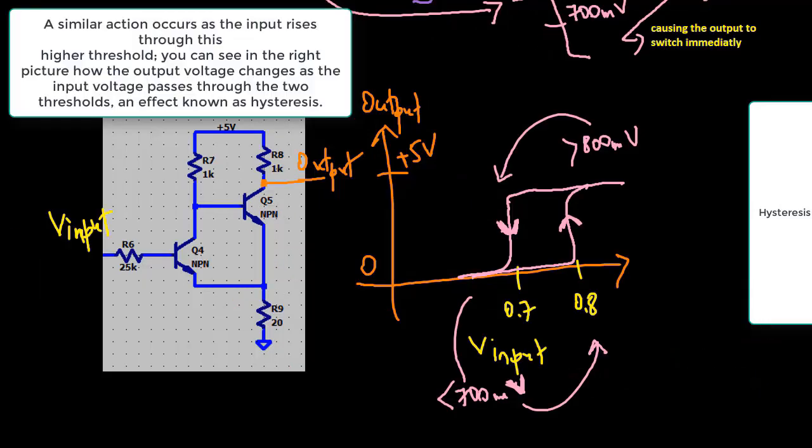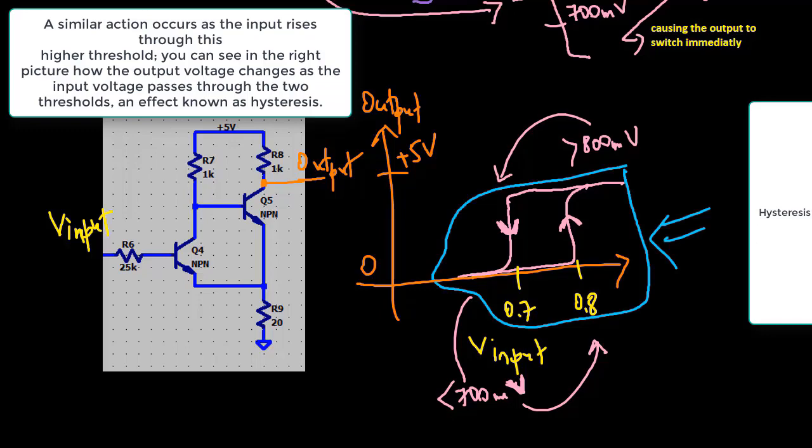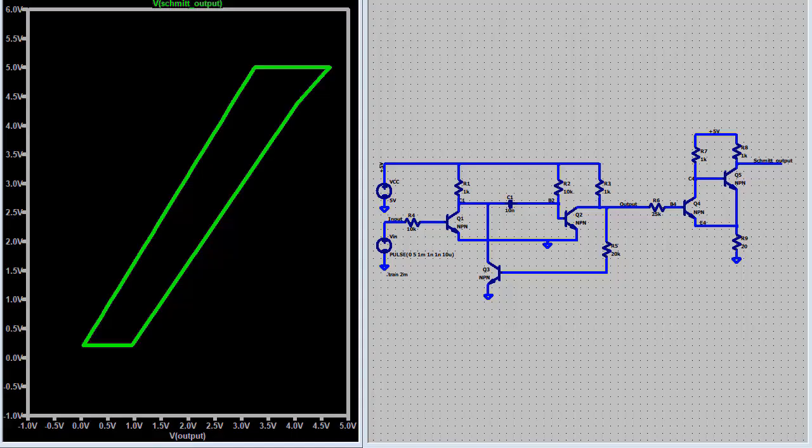A similar action occurs as the input rises through this higher threshold. The output voltage changes as the input voltage passes through the two thresholds, an effect known as hysteresis. The Schmidt trigger produces rapid output transitions as the input passes through either threshold.